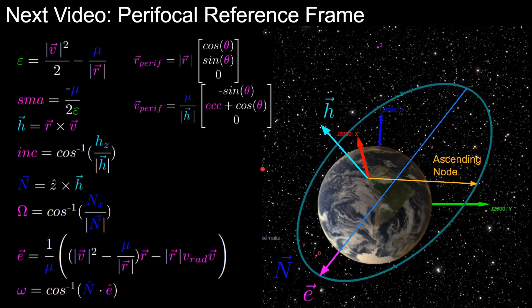In the next video, we'll be going over the perifocal reference frame, which we'll need in order to convert back and forth between the state vector — position and velocity — and the Keplerian orbital elements. Let me know if you have any questions or comments. Be sure to like and subscribe if you found this helpful, and I'll see you in the next one.